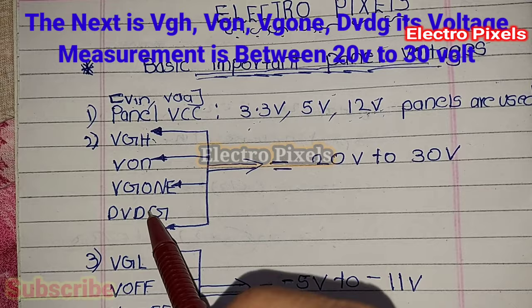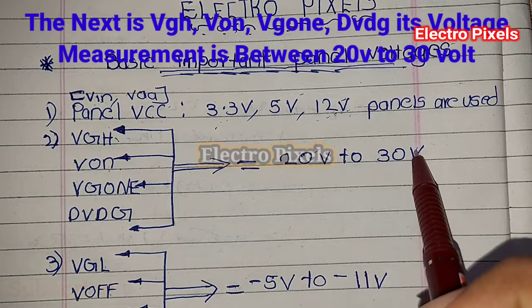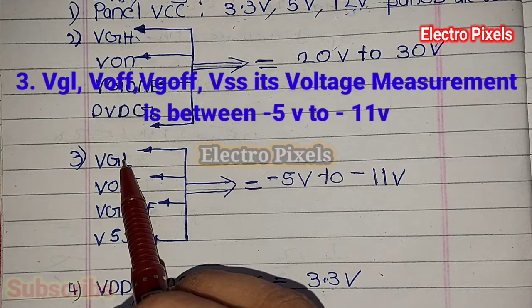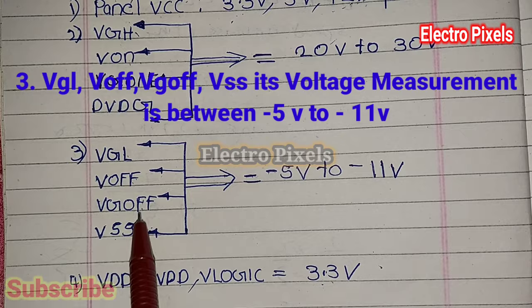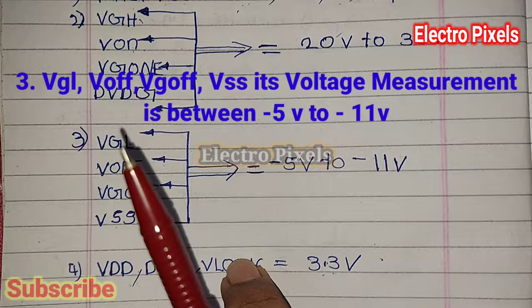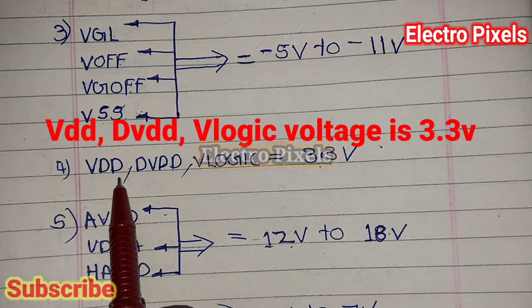The next voltage section is VGH, also called V-on or VG-on. Its voltage measurement is between 20V to 30V. The third one is VGL, also called V-off, VG-off, or VSS. Its voltage measurement is between negative 5V to negative 11V.